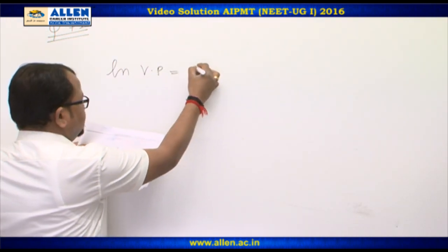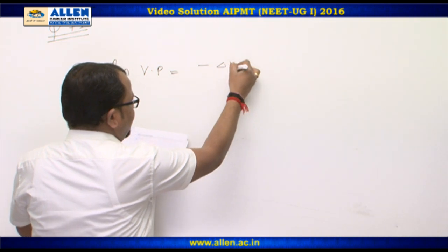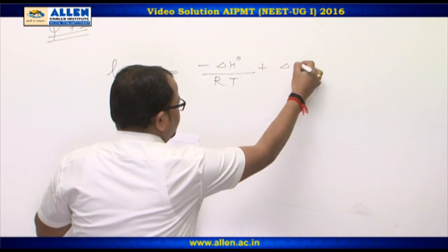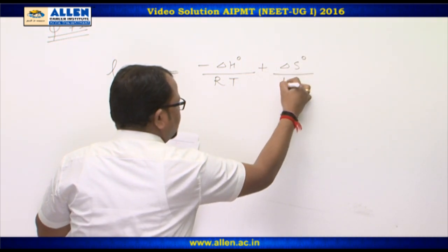Ln vapor pressure equals negative delta H naught over RT, plus delta S naught by R.